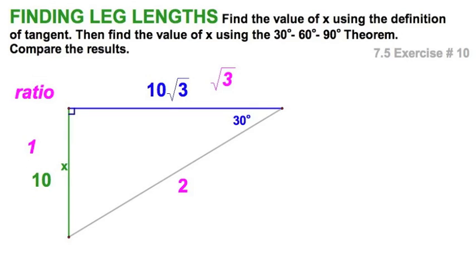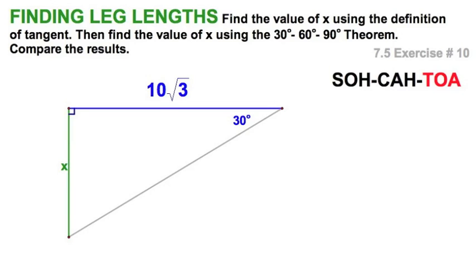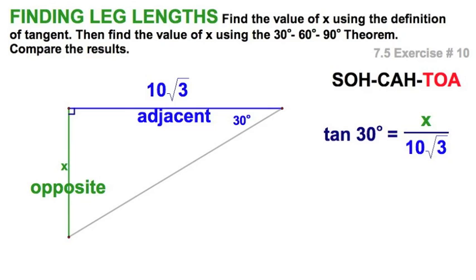Well, let's compare that to using trig. Here we go. So, I could say with my SOH-CAH-TOA, obviously this side is the adjacent here. This is the opposite. Opposite over adjacent. Let's set that up. So, the tangent of 30 equals x over 10 radical 3. Multiply both sides of the equation by 10 radical 3. There you go.